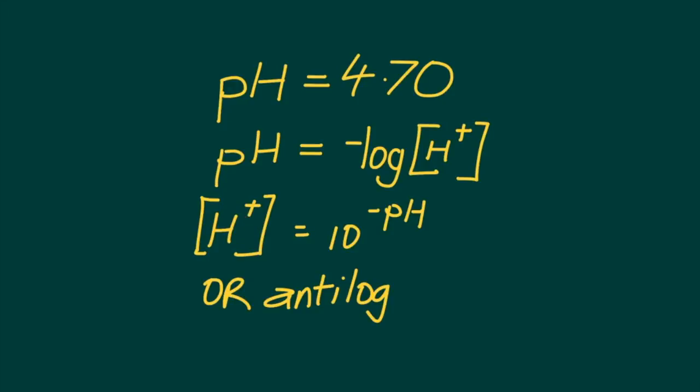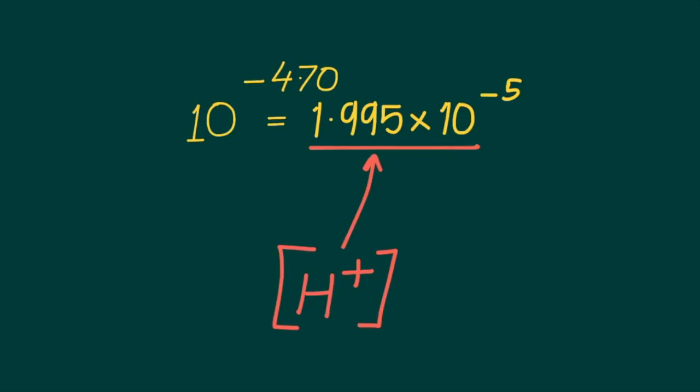To do this we set up this relationship which is the anti-log of the given value: 10 to the power of negative pH, or negative 4.70. This value comes to 1.995 by 10 to the power of negative 5, and this is the concentration of hydrogen ions in moles per cubic decimeter or moles per liter.